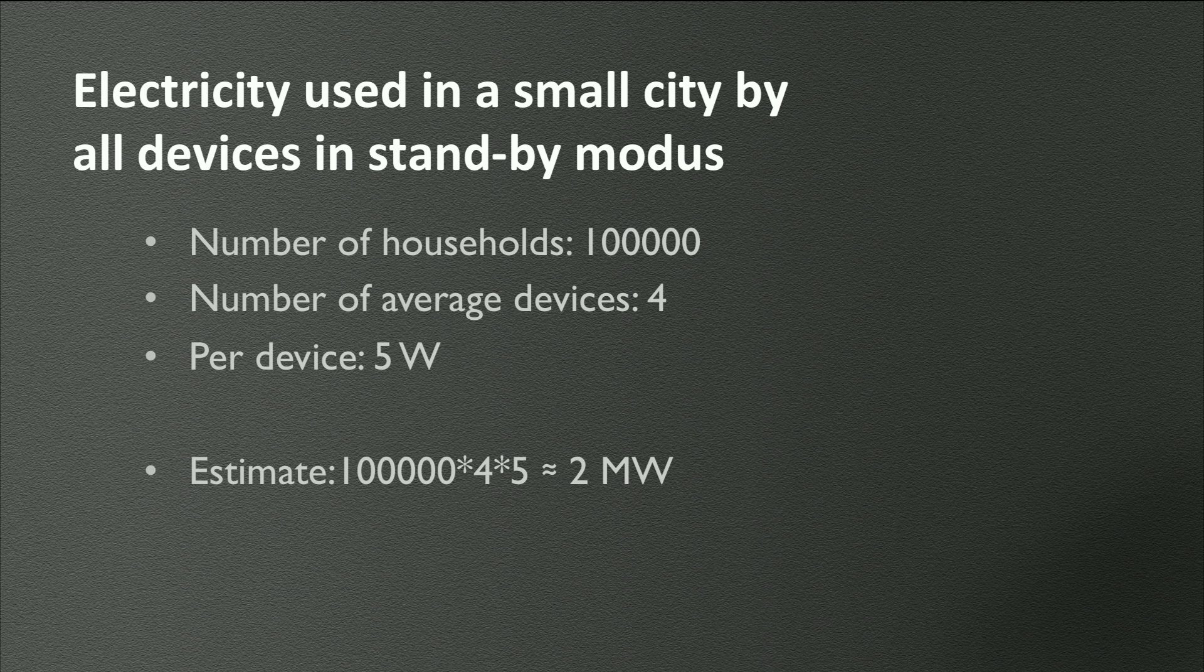Okay, then we have 100,000 households times 4 devices times 5 Watt makes roughly 2 megawatts. That is a small part of an average capacity of a power plant, around 100 to 300,000 megawatts. So that number could be true.